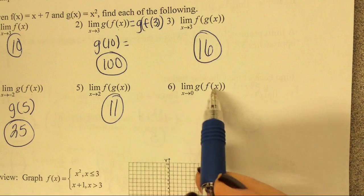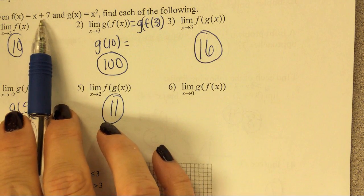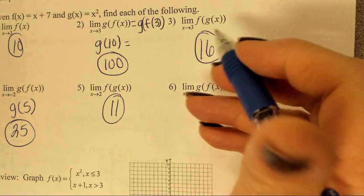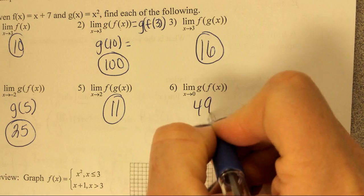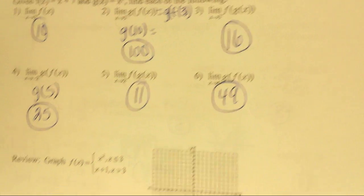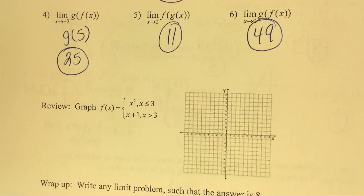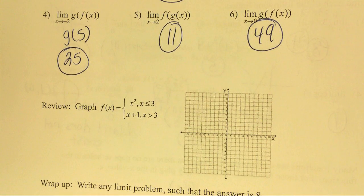Try number five on your own. Kyle, what'd you get? Eleven is correct. Last one, plug zero into f of x, that's going to be seven. Plug seven in there. And then we're going to get forty-nine. Okay? So, very much what you would think you would do is the process that we would use.